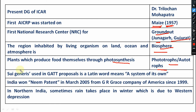Sui generis is a term used in GATT proposals — it is a Latin word meaning 'a system of its own.' GATT stands for General Agreement on Tariffs and Trade, which is very important and was established in 1947. In this GATT framework, the term sui generis is used.